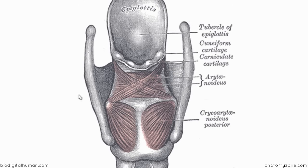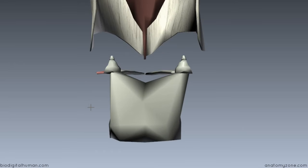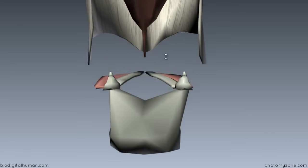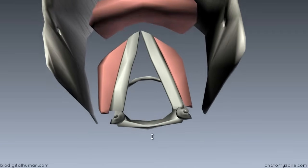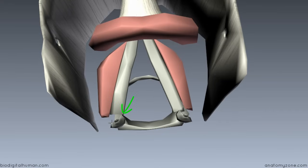These muscles insert onto the muscular process of the arytenoid cartilage. The arytenoid cartilage has two processes: the muscular process, which sticks out posteriorly and laterally, and the vocal process, which sticks out anteriorly and serves as the point of attachment for the vocal ligament. Rotating the 3D model to look superiorly, you can see the vocal process anteriorly and the muscular process sticking out posteriorly and laterally. The posterior cricoarytenoid muscle attaches onto this muscular process.